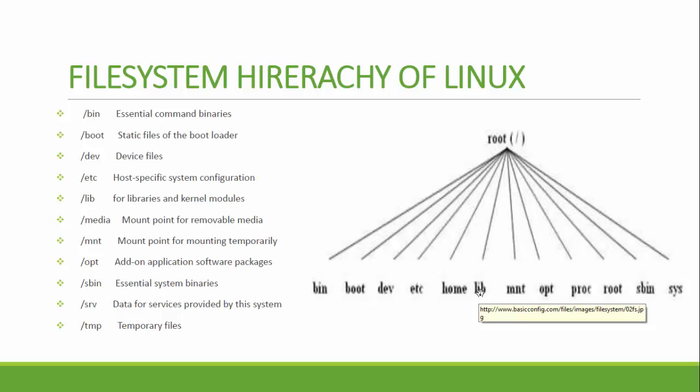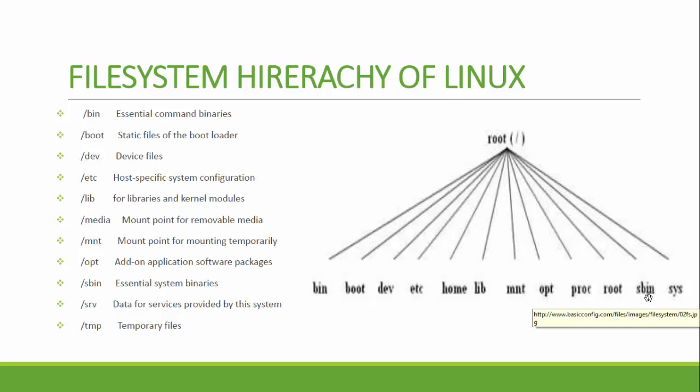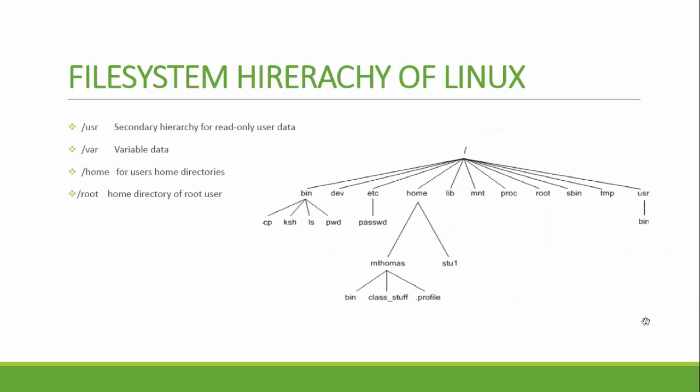Slash lib contains system-related library files and kernel modules. Slash mnt is for mount points. Slash opt is for third-party software. Slash proc is for processes — whatever software, commands, or terminals we run, those processes run in the background and are represented in slash proc. We don't modify anything there. Slash root is the home directory for the root user, and slash sbin contains another set of special commands.